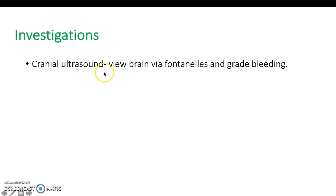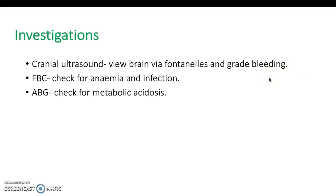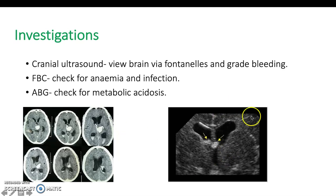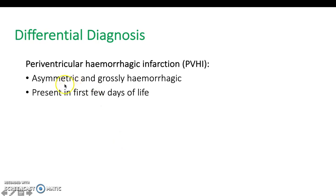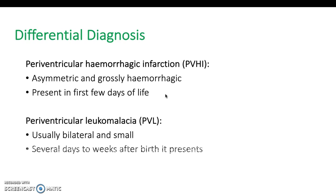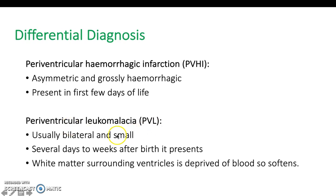For investigations, perform an ultrasound to confirm and grade the bleeding, plus a full blood count and an ABG. Differentials include periventricular haemorrhagic infarction, which is asymmetric and presents in the first few days of life. Also consider periventricular leukomalacia, which is bilateral, small, and has a more chronic presentation — appearing several days to weeks after birth. This is where the white matter surrounding the ventricles is deprived of blood and softens.